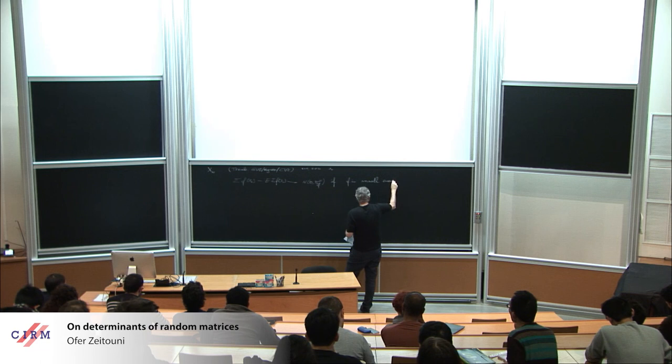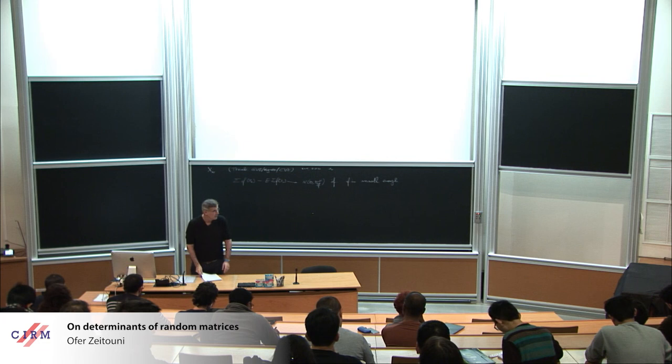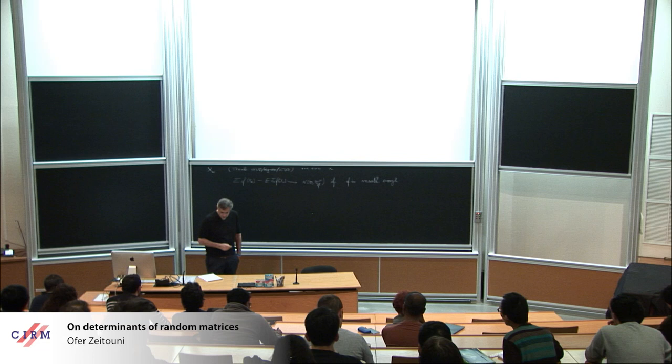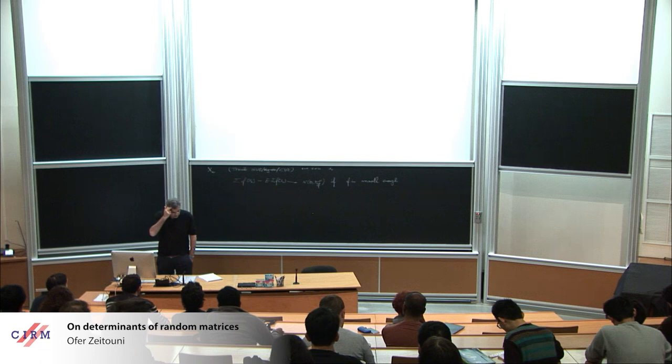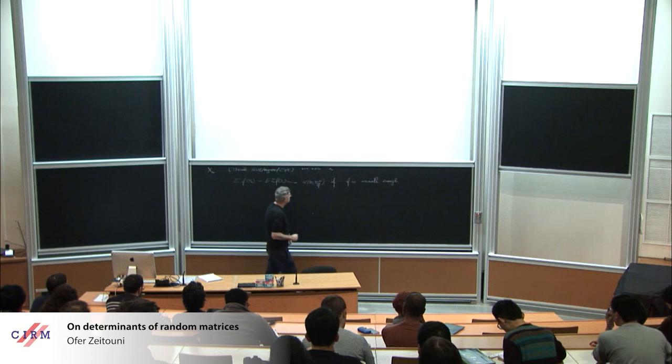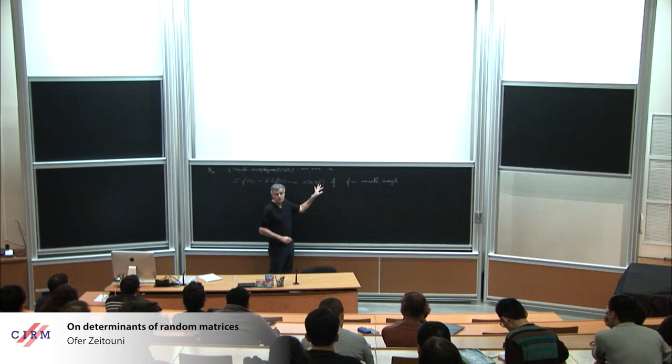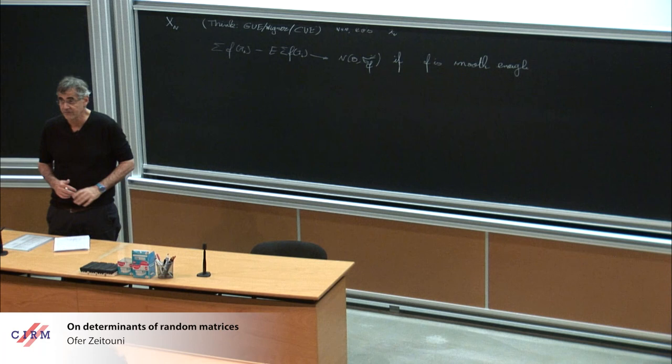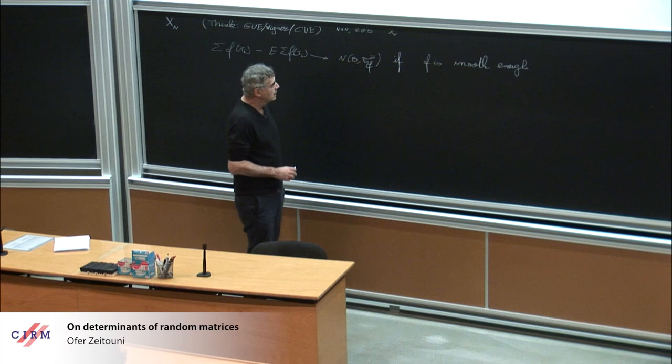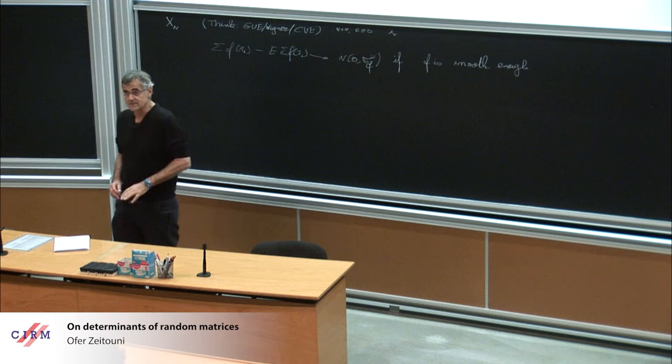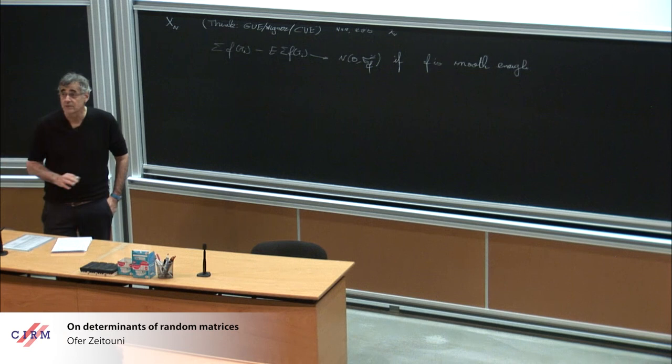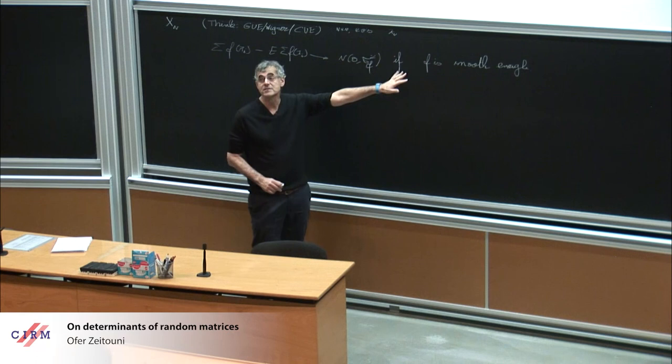This result has a very long history. It goes back to Jonsson in the context of Wishart matrices, early work of Pastur and collaborators. In particular in the Wigner case, you can write down the variance sigma F squared, which is related to the H one-half norm of F. It is not even proved in cases where the variance is finite.